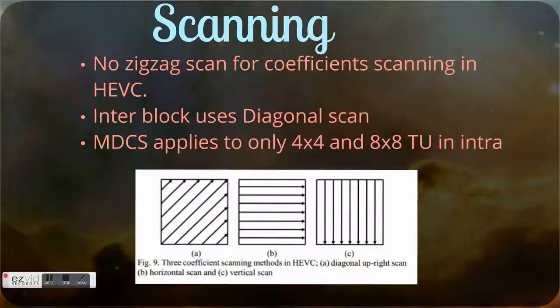Now, scanning. There's more scanning in H.265. We can use diagonal, we can use vertical and horizontal. There are 3 different scanning modes for the transform.